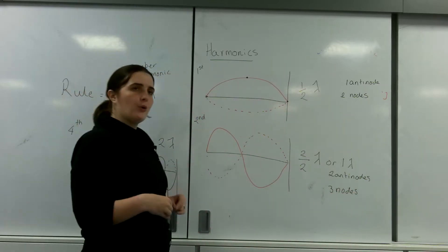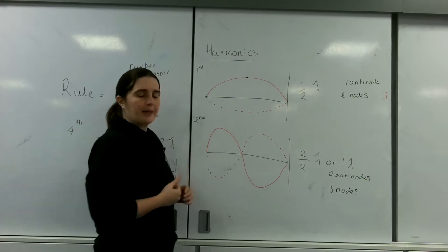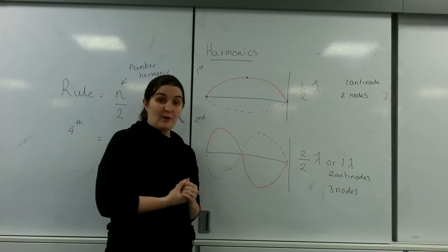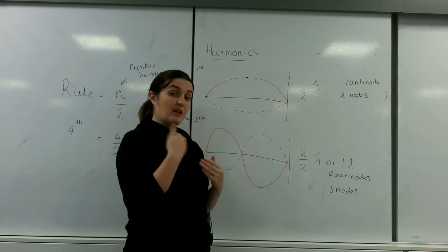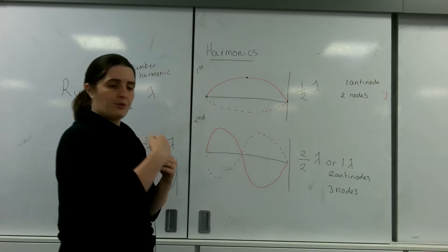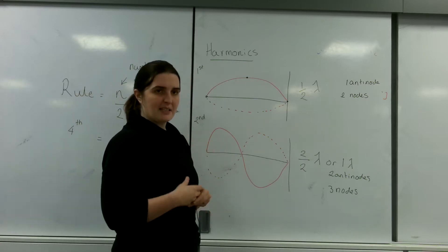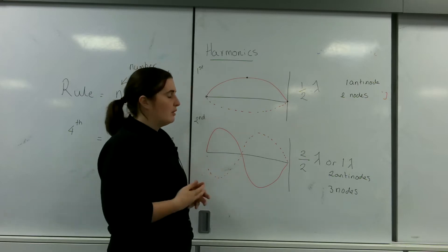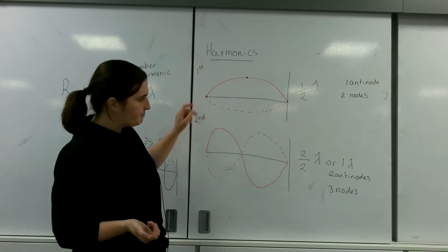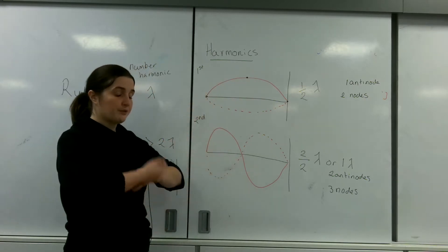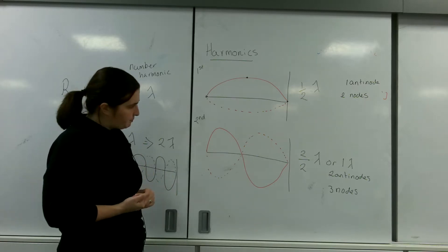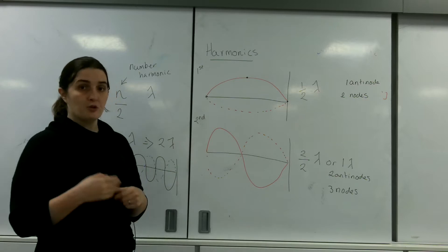You will always have 1 more node than antinode per harmonic. If you ever get questions on harmonics, they may not say antinode and node — they may say maxima and minima. They might say that it goes through a series of beeps and has a maxima bit and a minima bit. Antinode is the maxima and node is the minima. Remember: maxima is constructive interference, minima is destructive interference. If you are unsure about the question, you are more than welcome to draw the wave — this will really assist you.